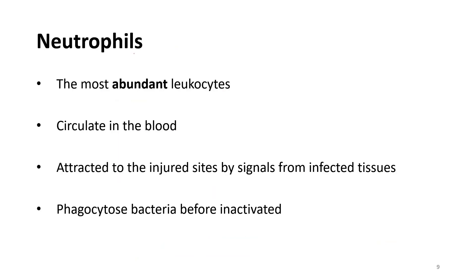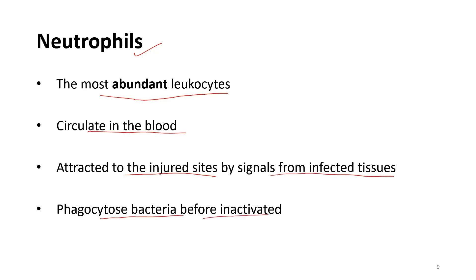Neutrophils are the most abundant leukocytes and circulate in the blood. They are attracted to the injured site by signals from infected tissues, where they phagocytose bacteria before becoming activated.